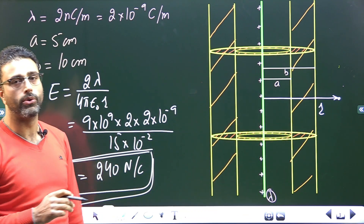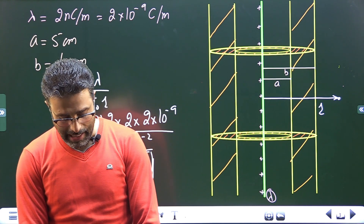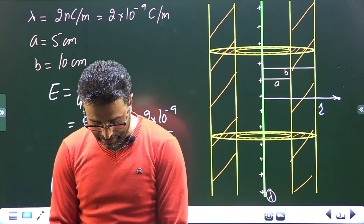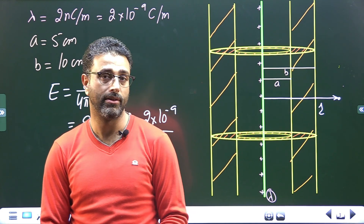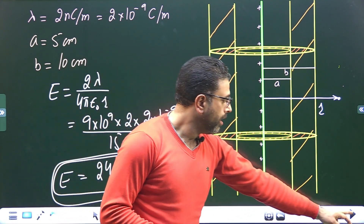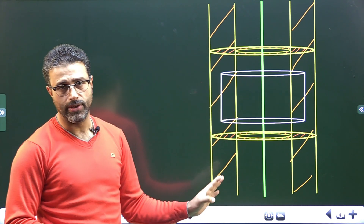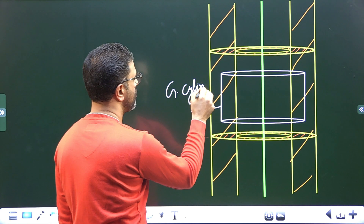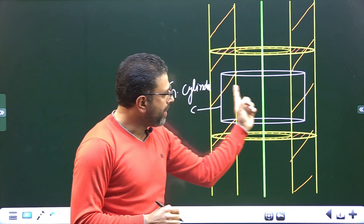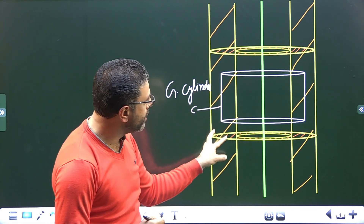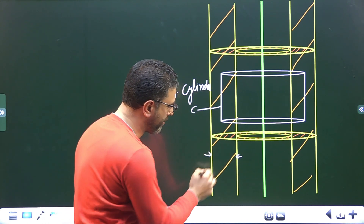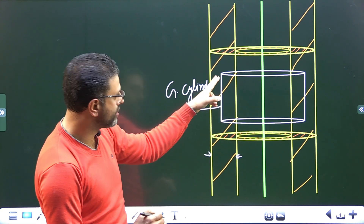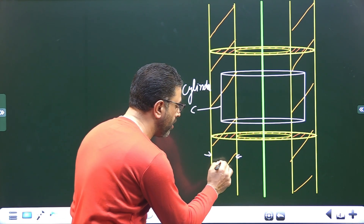So the electric field at a distance of 15 centimeters is 240 newtons per coulomb (or volts per meter). Now parts B and C ask us to find the induced charges on the inner surface and the outer surface. Remember the cylindrical shell is conducting, meaning free electrons are available. To find the charge on the inner surface, I'll consider a Gaussian cylinder whose curved surface lies entirely inside the metal of the shell — between the inner and outer surfaces.